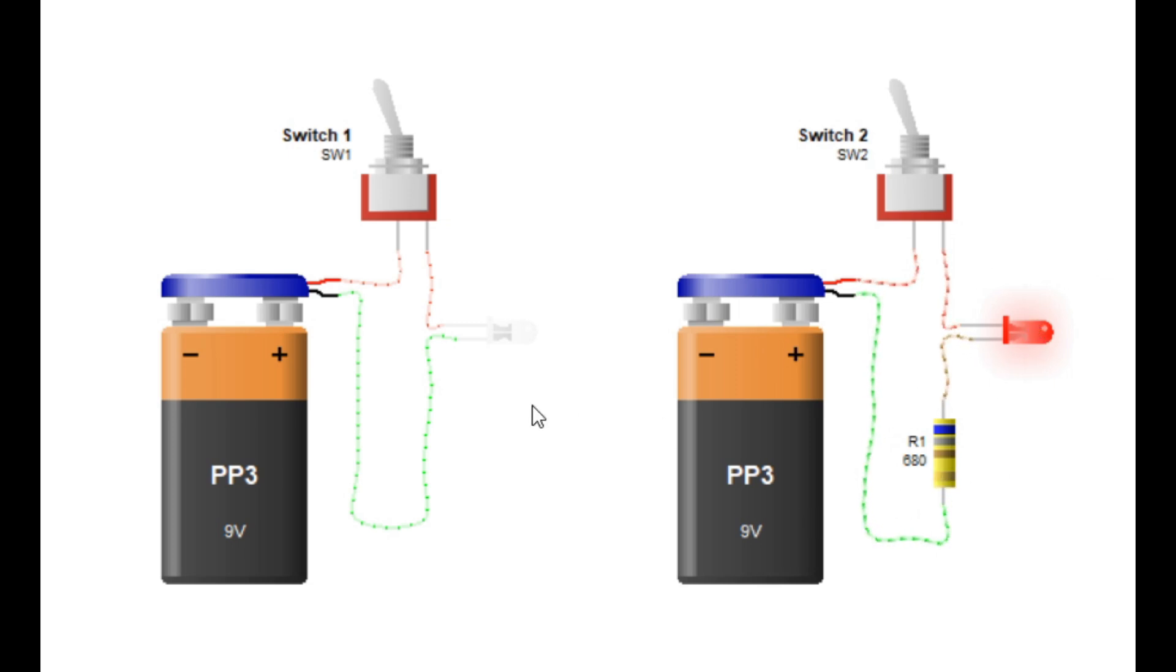Case 1: LED without a resistor. If you connect a red LED directly to a 9-volt battery, the LED will burn out almost instantly. Why does this happen? Well, an LED has very low internal resistance, which means too much current will flow through it. LEDs are designed to work at a specific forward voltage and a safe current limit. If you exceed that limit, the LED will be destroyed.